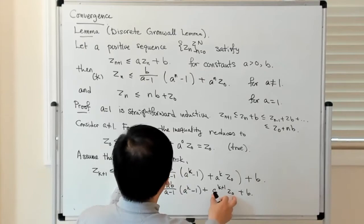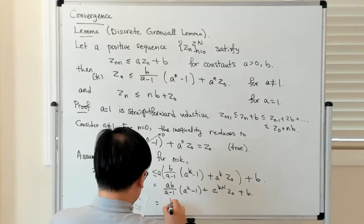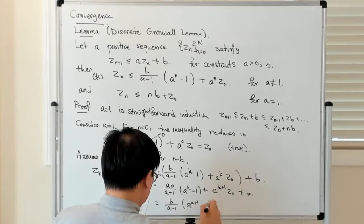We have to combine this B term into this. You can check that this is actually equal to B/(A-1) times (A^{k+1} - 1).